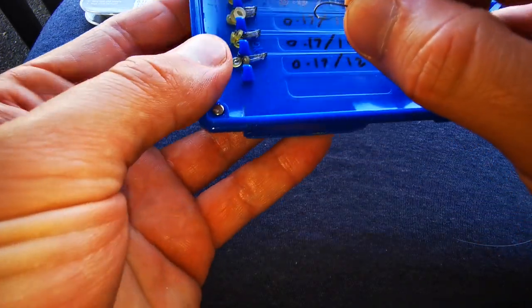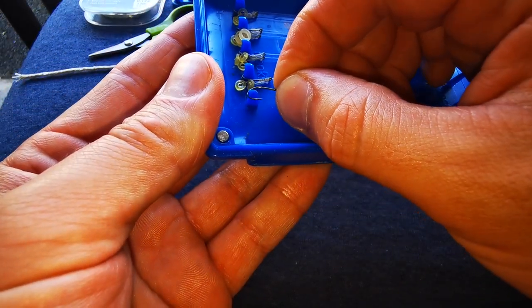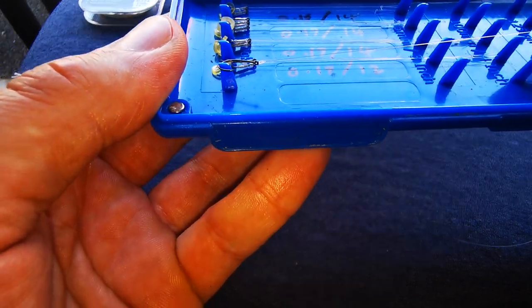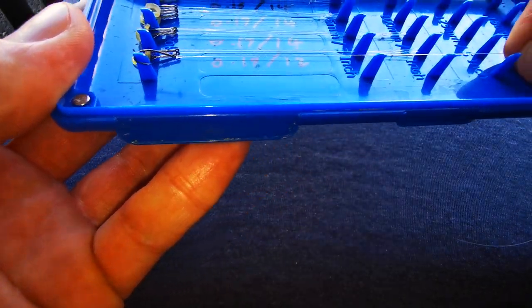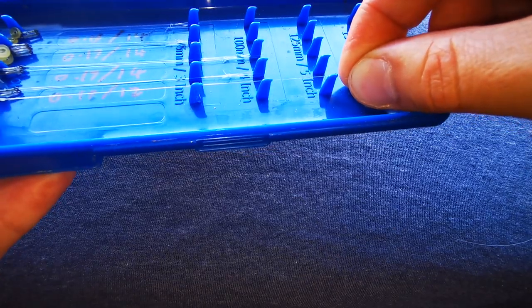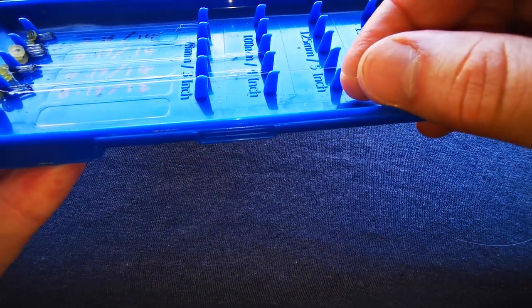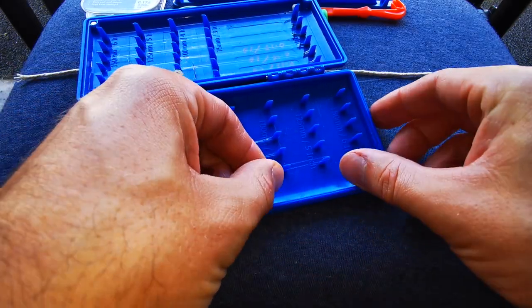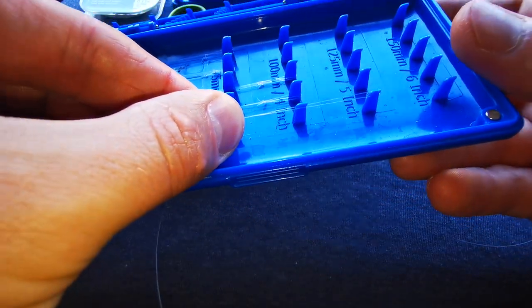Then what we're going to do is hook the hook end on this end and put it right at the very top. We're going to do a five inch hook length, so you run the line right at the very top, bring it back round, hold it with the other hand. You can see both lines are running right next to each other.